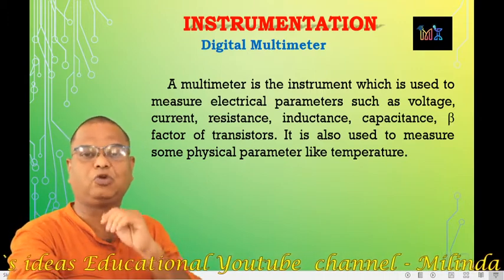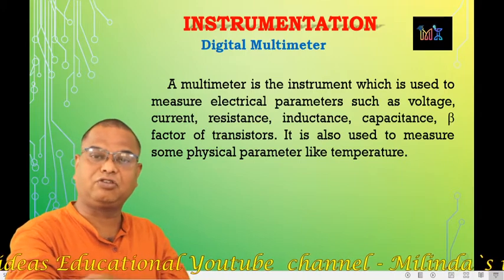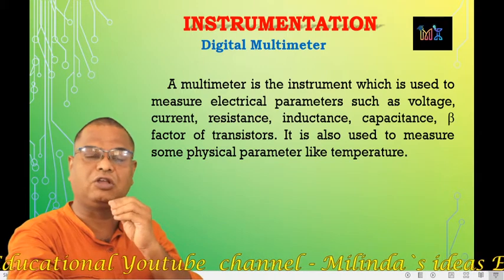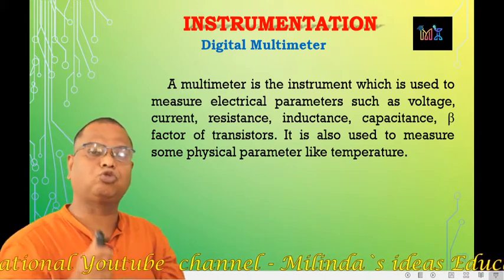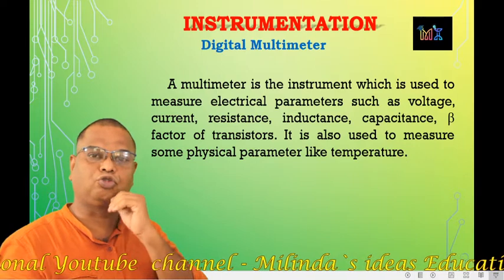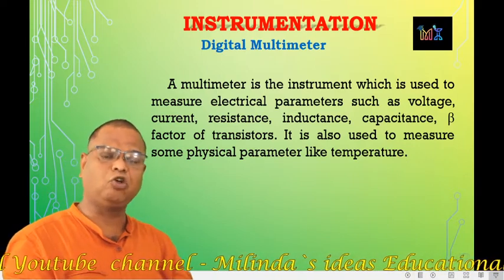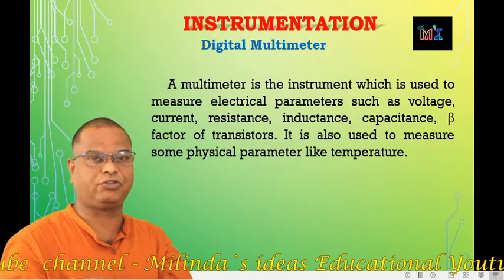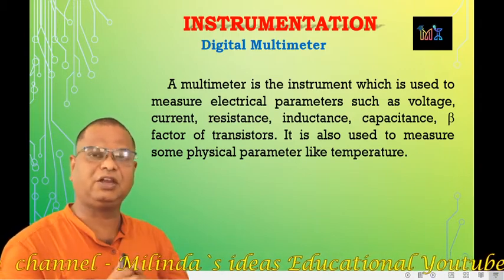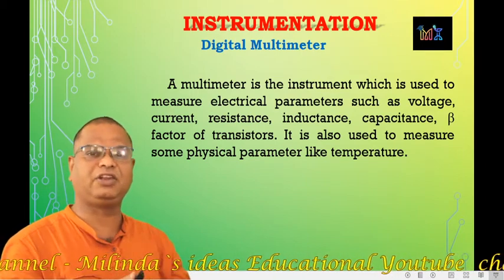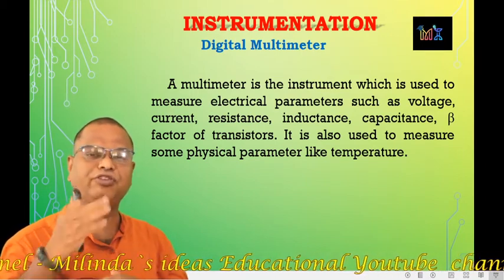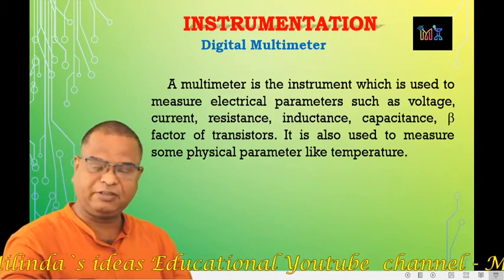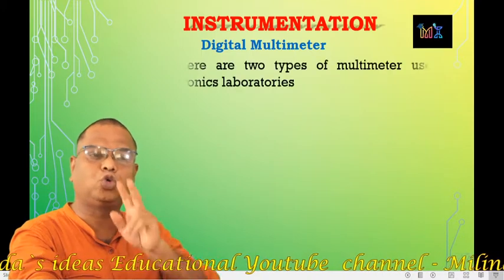Other parameters can also be measured, such as checking capacitors, inductors, beta parameters of transistors, and the operation of diodes. So a multimeter is an instrument used to measure more than one parameter — it measures multi parameters.